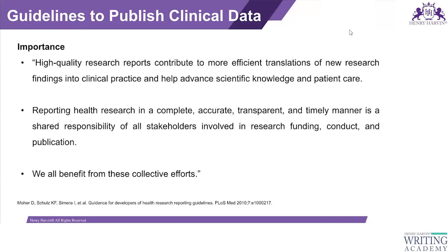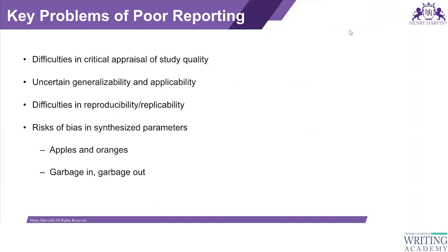What are the key problems in poor reporting? First, critical appraisal or quality assessment of the study cannot be done. Second, there is uncertain generalizability — meaning the future implications and applicability of the research cannot be understood. Third, there are difficulties in reproducibility and replicability — if the methodology is not clearly mentioned, it will be difficult to reproduce or replicate. And fourth, there is a risk of bias, because everything is not clearly presented in the study.